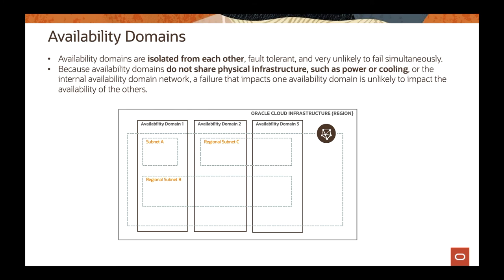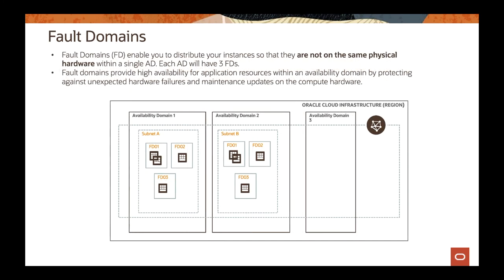Going deeper inside an availability domain, each AD has what we call fault domains, and each one will have three fault domains. So if you decide to keep your application in a single AD, you can still take advantage of HA by splitting your application across multiple fault domains. Fault domains follow the same concept as ADs — they do not share any physical hardware or infrastructure. If something happens with fault domain 1, that's not going to affect fault domain 2 or fault domain 3.